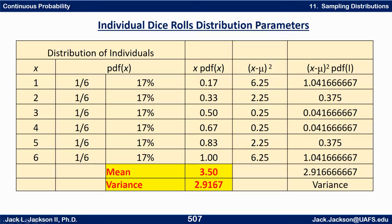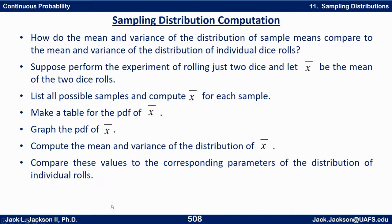Let's look at the individual dice rolls and compute some parameters. The x values are 1, 2, 3, 4, 5, 6 with probabilities of 1/6 each. If we multiply x times the probabilities and add those up, we get a mean of 3.5 exactly. If we then take x minus the mean and square them, multiply by the probabilities, and add those up, we get the variance — which is about 2.916 repeating. How do the mean and variance of the distribution of sample means compare to these values for individual dice rolls?